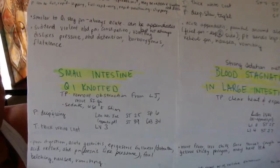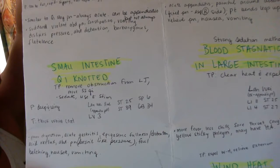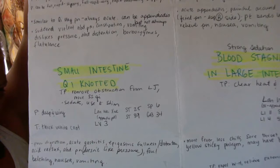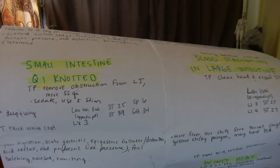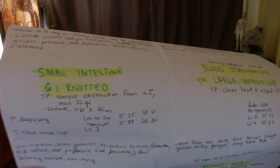Small intestine chi knotted pulse is deep and wiry. Tongue is thick white coat. Treatment principle: remove obstruction from lower jowl, move small intestine chi. Sedate and use e-stem. Points combo: Long way shui appendix point, liver 3, stomach 25, spleen 6, stomach 39, gallbladder 34.